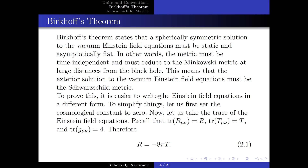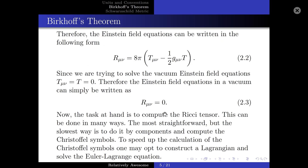To prove this, it is easier to write the Einstein field equations in a different form. To simplify things, let us first set the cosmological constant to zero. Now, let us take the trace of the Einstein field equations. Recall that the trace of the Ricci tensor is simply the Ricci scalar, and the trace of the energy momentum tensor is simply T. Therefore, R is equal to minus 8 pi T. As a result, the Einstein field equations can be written in a new form. Since we are solving for the vacuum Einstein field equations, the energy momentum tensor is set to zero, and the Einstein field equations in a vacuum reduce accordingly.